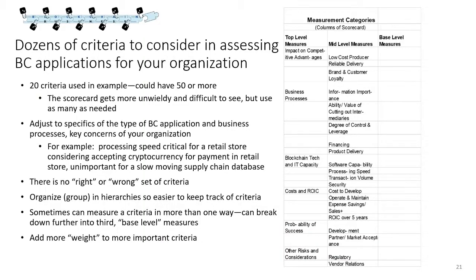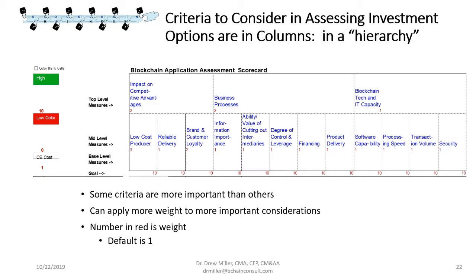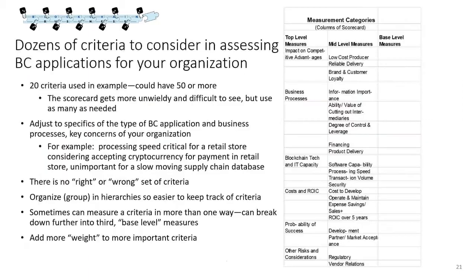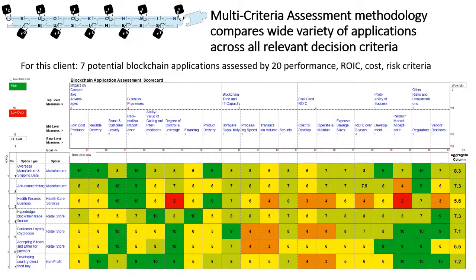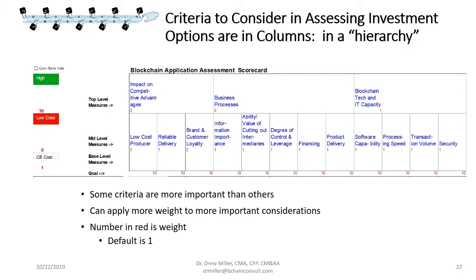In Excel, you enter the different criteria in a hierarchy — top level measures, mid-level measures, and base level measures — then rate and compare how every different application option performs on these criteria. Once you enter the data and hit 'create scorecard,' it produces a scorecard in an Excel spreadsheet. You then go through your criteria and apply different weights to different factors — for example, impact on competitive advantages might be weighted two, business process weighted two, and blockchain technology and IT capacity weighted lower at one.